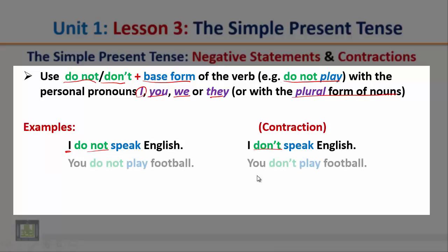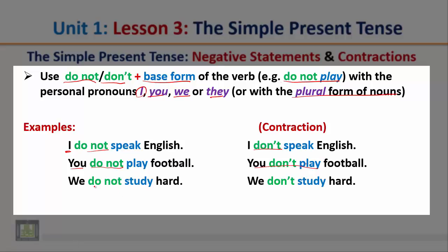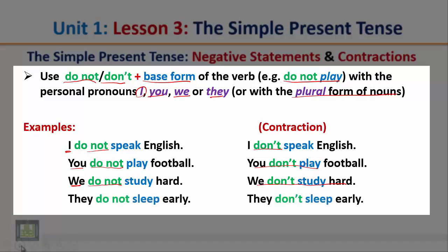You do not play football — notice we use 'do not' after the subject 'you'. The contracted form is: you don't play football. We do not study hard — we use 'do not' after the subject 'we'. The contracted form is: we don't study hard. They do not sleep early — we use 'do not' after the pronoun 'they'. The contracted form is: they don't sleep early. So after the pronouns I, you, we, and they, we use 'do not' plus the base form of the verb.